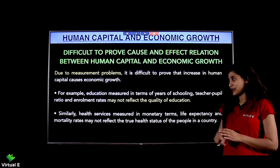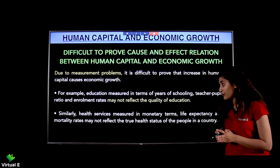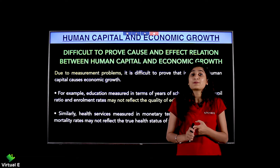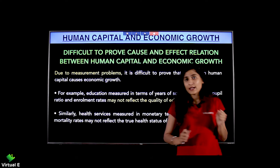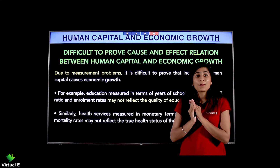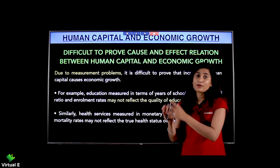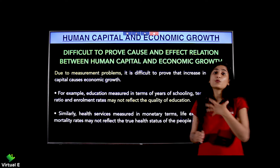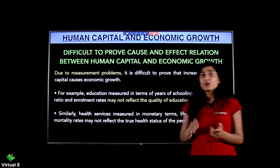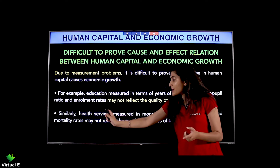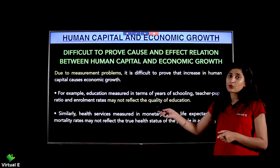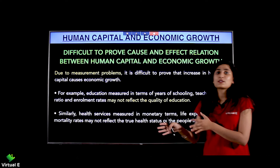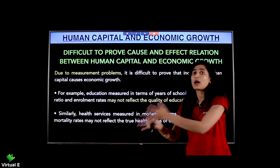Similarly, health services measured in life expectancy and infant mortality rates may not reflect the true health status. Infant mortality rate refers to health issues occurring in children under one year of age. Life expectancy tells how long people will live. Even with these metrics improving, you don't know the exact health status because you cannot precisely measure which intervention had what effect.